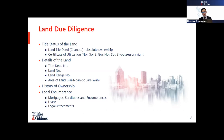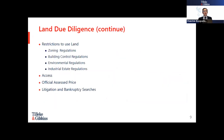Under Thai law, a lease of immovable property for a period of more than three years must be in writing and registered with the competent officials, so we must identify this as well. We also need to identify the restrictions on use of land, as land utilization in Thailand is segregated into different purposes according to zoning regulations in each provincial or sub-district area.